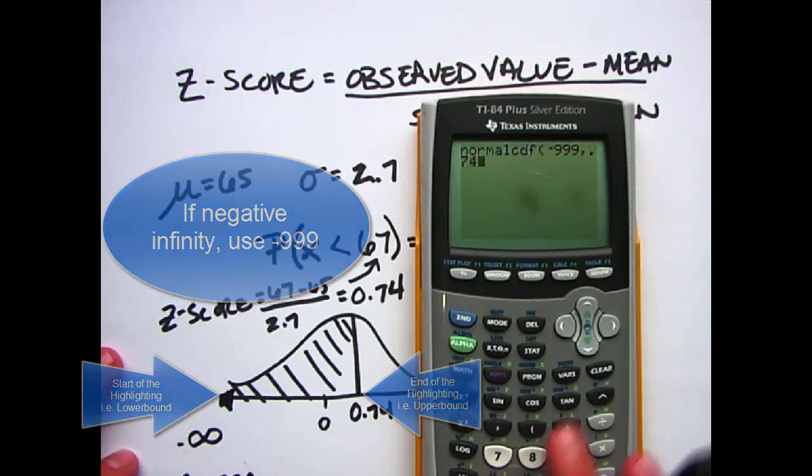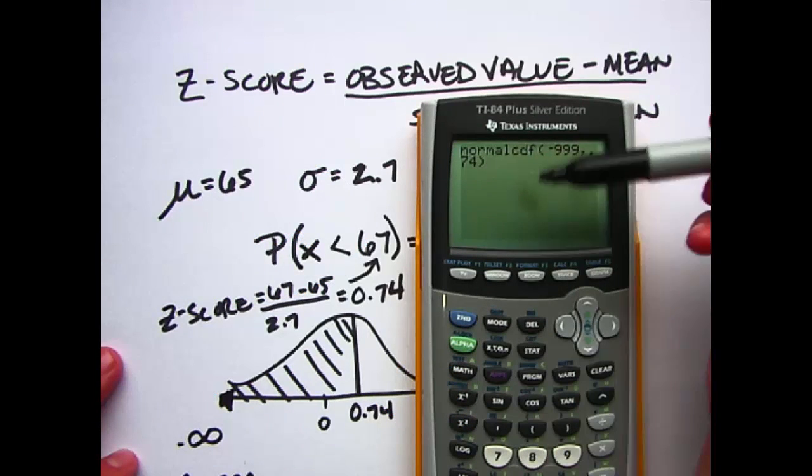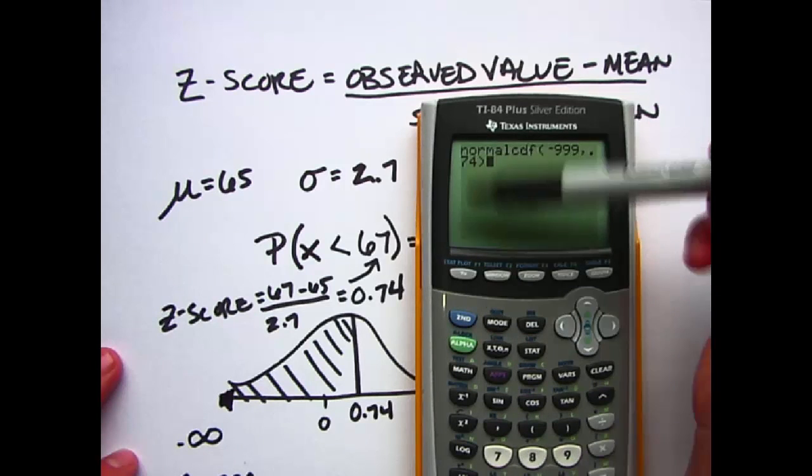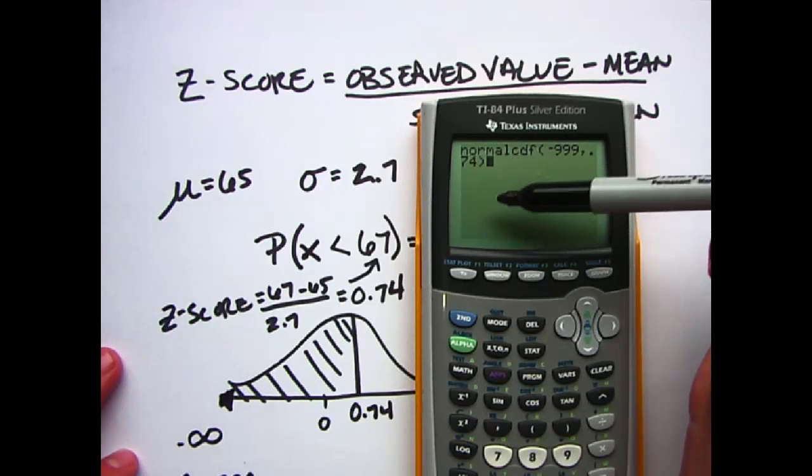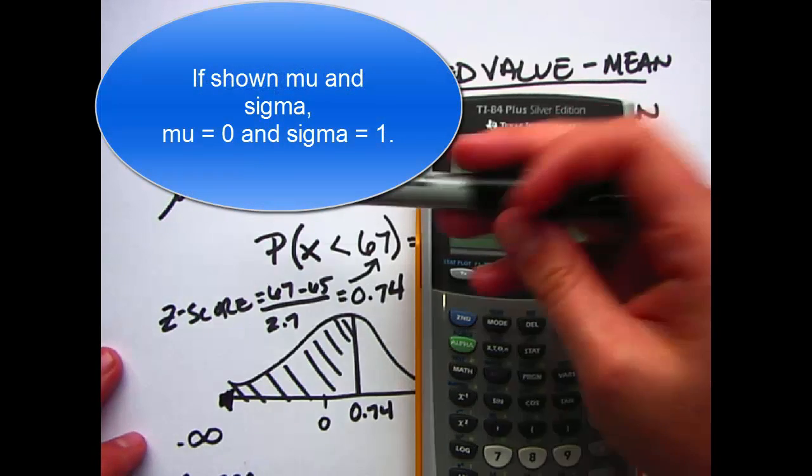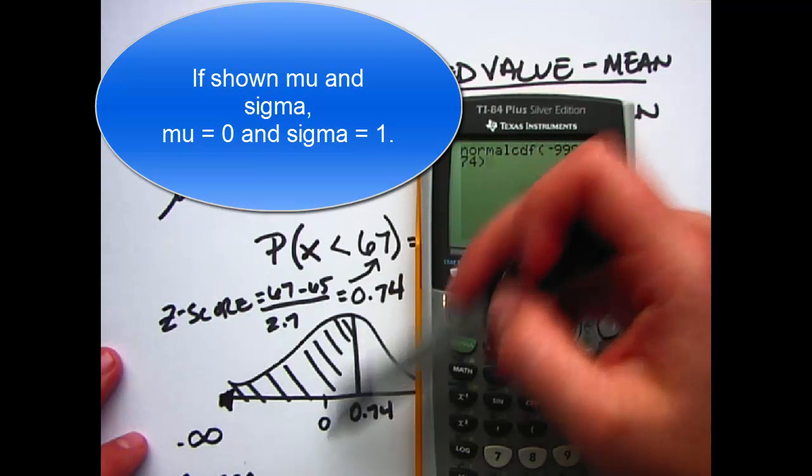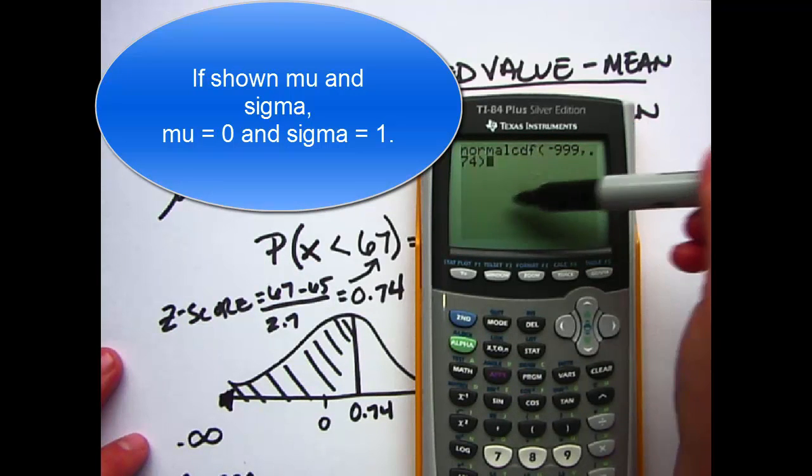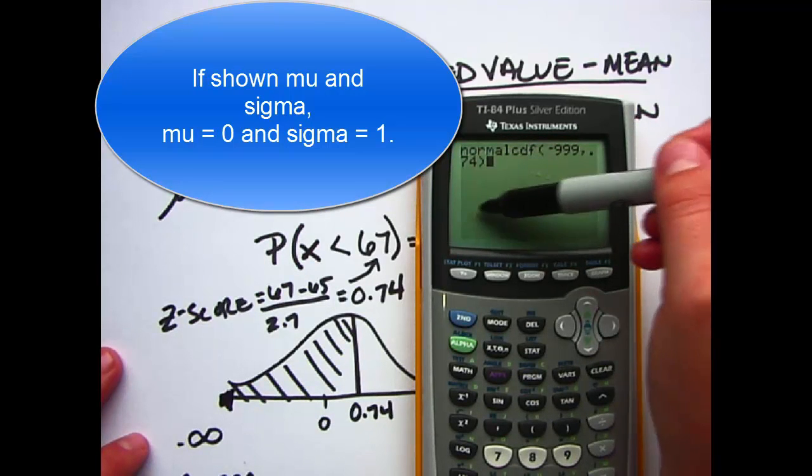Now if your calculator has lower bound, upper bound, and then mu and sigma, we're now talking about the standardized value for mu and sigma, so that would be 0 because that's the distance those values are from the mean. Mu is 0 distance from itself, so mu would be 0 on your calculator and sigma would stay 1.